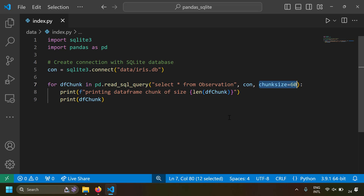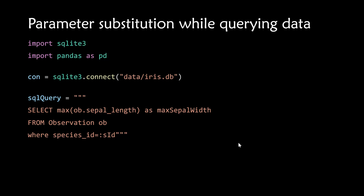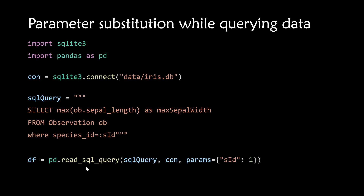The next topic is parameter substitution while querying data. For example, you might select the maximum sepal length from observations where species ID equals some number. Instead of hardcoding the number, you can use a named query parameter — write `species_id = :s_id` — and substitute it at query execution time. This is important to avoid SQL injection, especially if you're using this script in a Python web server taking user inputs. You provide the `params` argument as a dictionary, e.g., `{'s_id': 1}`, when calling `pd.read_sql_query()`.